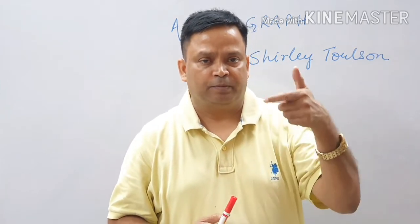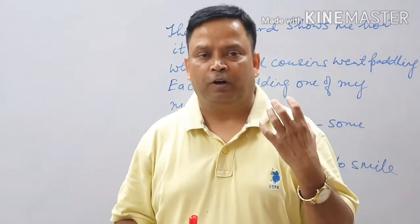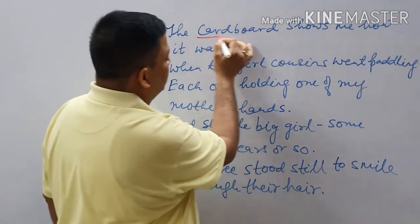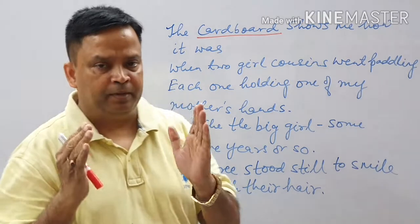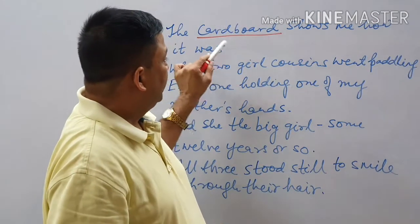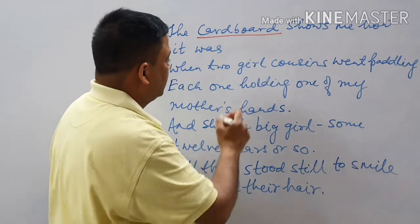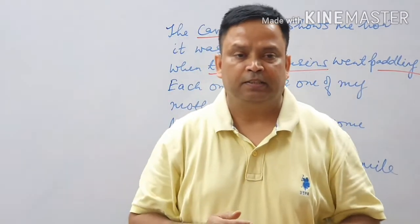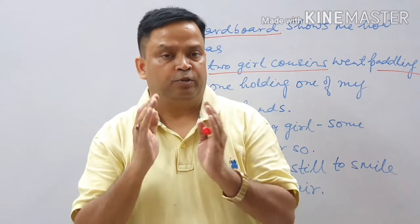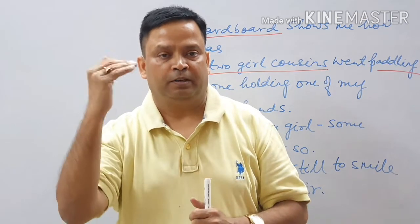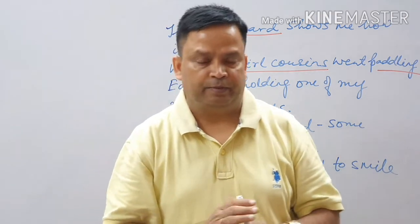Now I'm going to start with the text of the poem. The poem starts with: 'The cardboard shows me how it was.' Look at the word 'cardboard' — cardboard is the photo frame on which a photograph was pasted. This is the first phase of the poem, when the poet's mother went on a sea holiday at the age of 12 years. The cardboard shows how it was when the two girl cousins went bathing — the poet's mother's girl cousins.